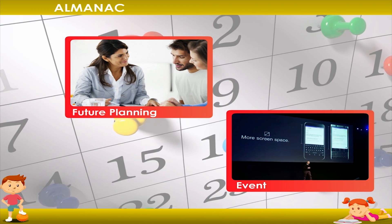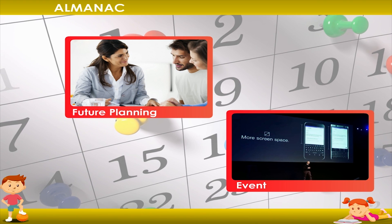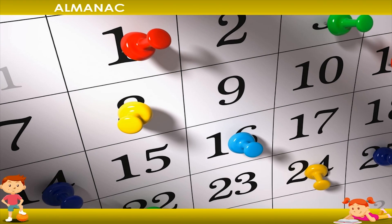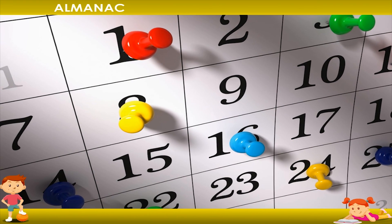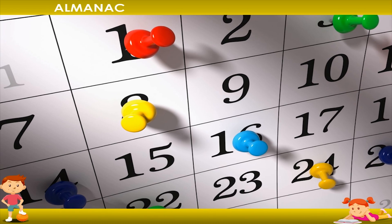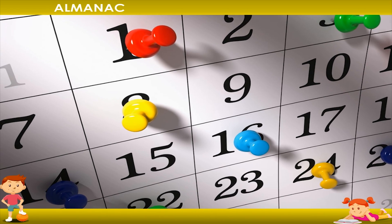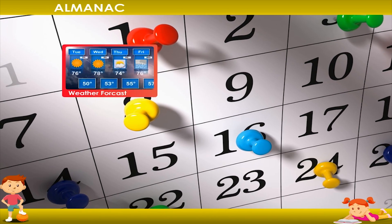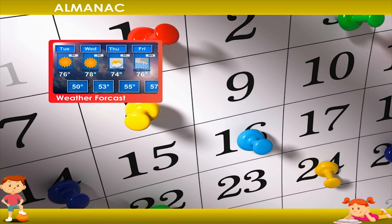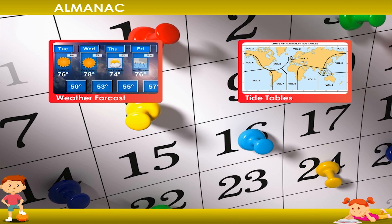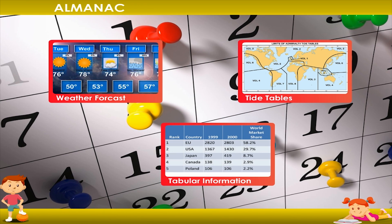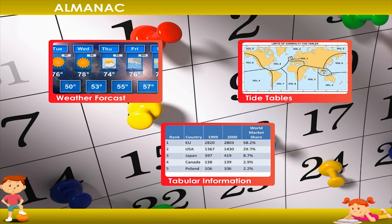A calendar is also called an almanac. An almanac is an annual publication which includes information such as weather forecasts, tide tables, and tabular information arranged according to the calendar.